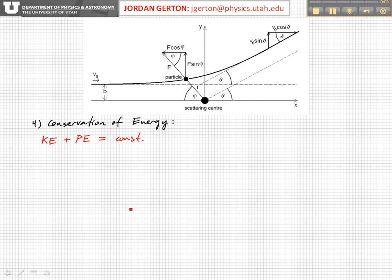The last thing we have to consider to complete this derivation is conservation of energy. So the sum of kinetic and potential energy is equal to constant over this interaction. And so initially, when the particle comes in from far away, it has kinetic energy equal to one-half mv0 squared, but it has no potential energy because it's far away from the scattering center, so the Coulomb force is essentially zero.